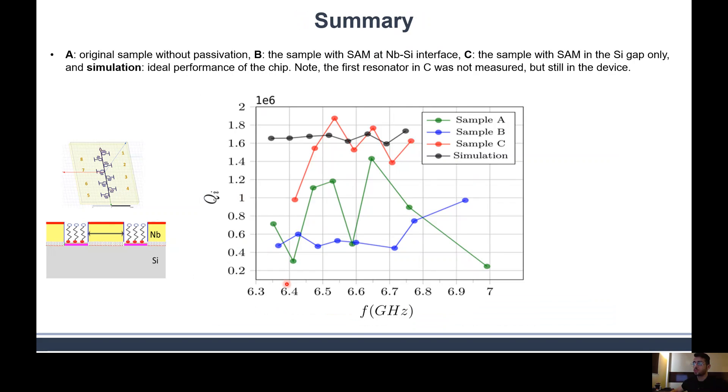This study can be summarized in this figure where we have all of the resonators and all of the quality factors of the resonators versus the frequency for the four samples. The red one shows the SAM with standard process sample compared to the standard process sample alone. We can see the quality factor has improved and is approaching the simulation of the ideal performance of the device. This improvement is an overall improvement of the device and gives us a reproducible approach in the fab process.